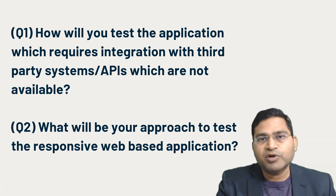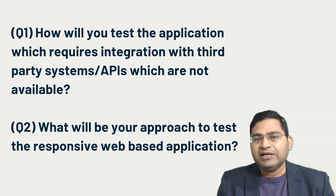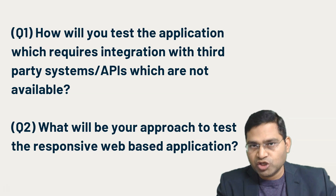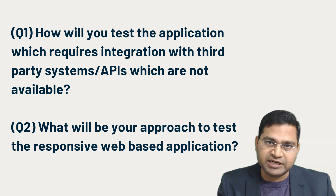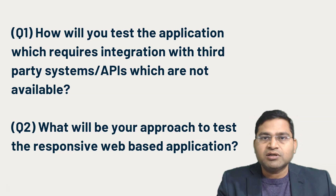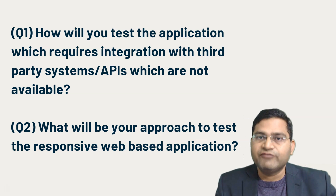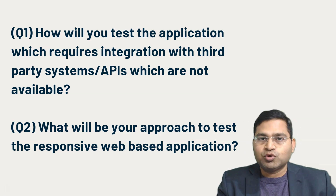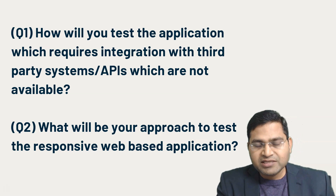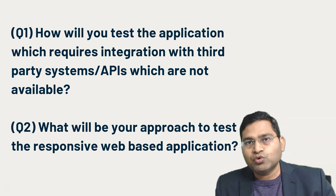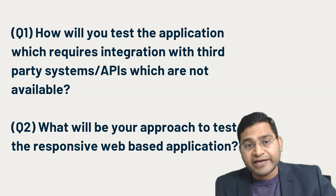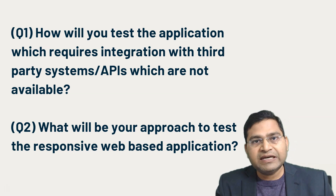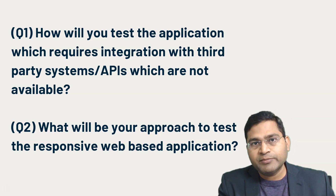There are multiple ways to tackle this. First, the development team, by default, develops stubs for whichever third-party systems are not available. They use development tools — there are multiple mocking tools available, for example WireMock or Mountebank — to create stubs or mock the APIs. The development team creates those mocks and, as part of those mocks, sends responses the way the third-party system or API would send to the application.